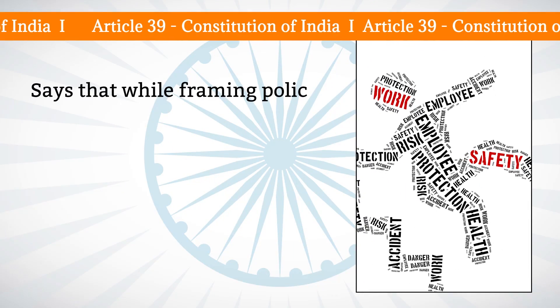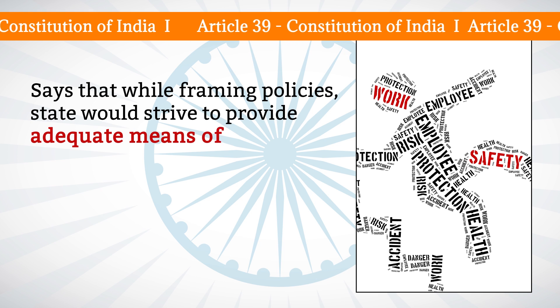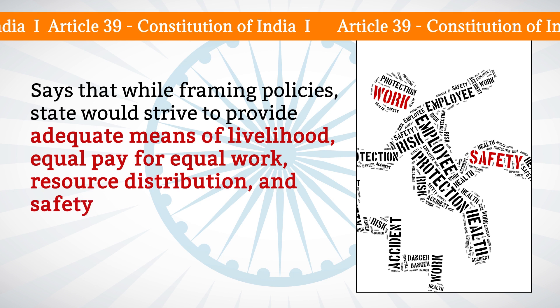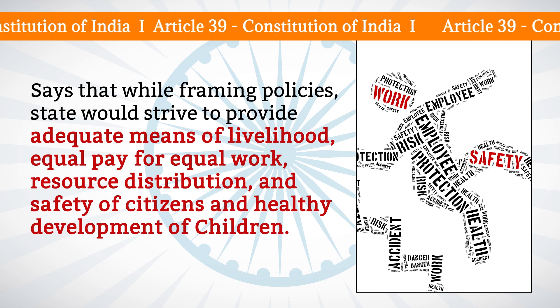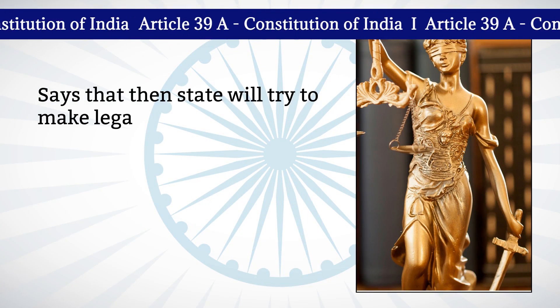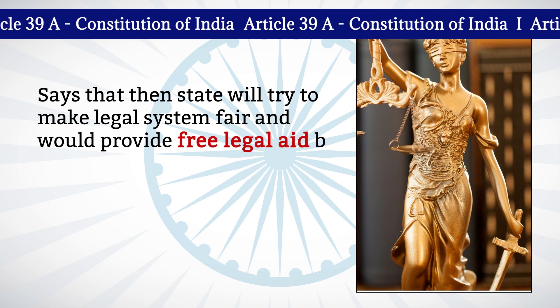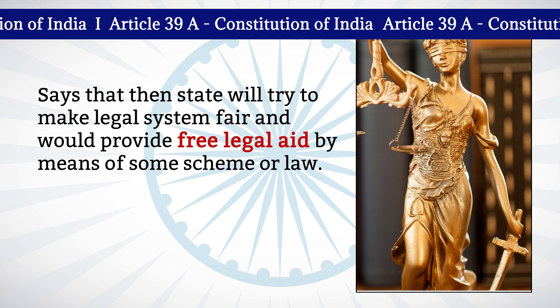Article 39 says that while framing the policies, the state would strive to provide adequate means of livelihood, equal pay for equal work, resource distribution, and safety of the citizens and healthy development of the children. Article 39A says that the state will try to make the legal system fair and would provide free legal aid by means of some scheme or law.